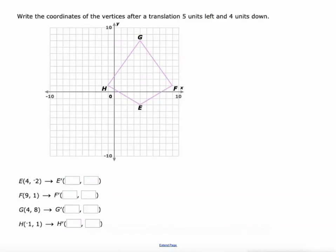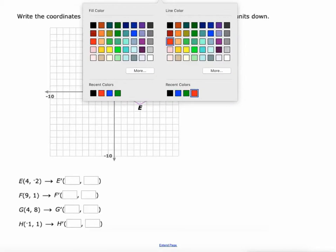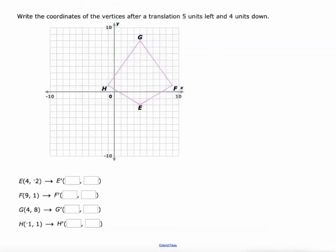Here we go again, this time we're going five left and four down. So I like to concentrate on just one thing at a time here. So let's concentrate on the five units to the left. Five units to the left means we're going to subtract five from all of our x values. So four minus five is negative one, nine minus five is four, four minus five is negative one and negative one minus five is negative six. Then when we go four units down, we're going to take all of our y values and subtract four. So negative two minus four is negative six, one minus four is negative three, eight minus four is positive four and one minus four is negative three.